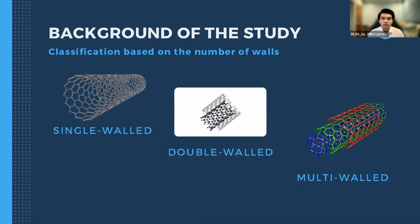Here are images depicting the classifications of carbon nanotubes based on their number of walls or layers. A single-walled CNT has only one layer, a double-walled CNT has two layers, and a multi-walled CNT has three or more layers.